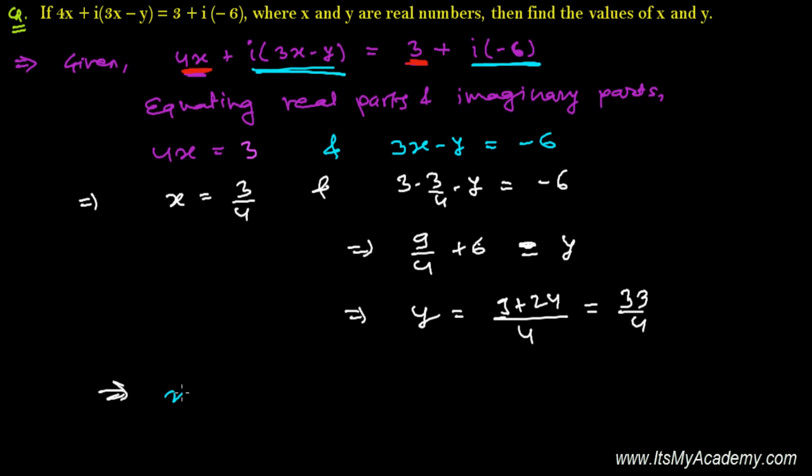Finally, we get the value of x as 3 over 4 and y equals 33 over 4. That's our answer - we found the value of x and y as 3 by 4 and 33 by 4 respectively.